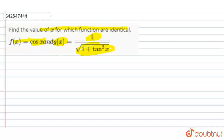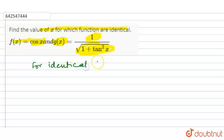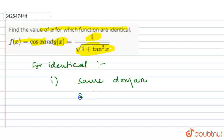We know that for two functions to be identical, there are three conditions. The first one is they have the same domain. The second one is they have the same range, and the third one is they should be equal to each other.